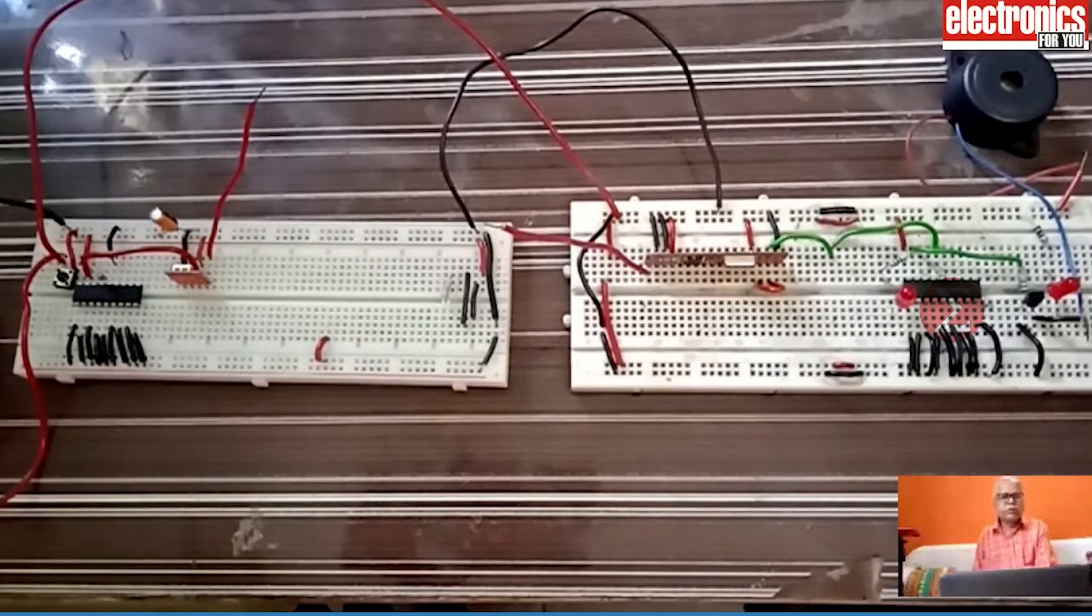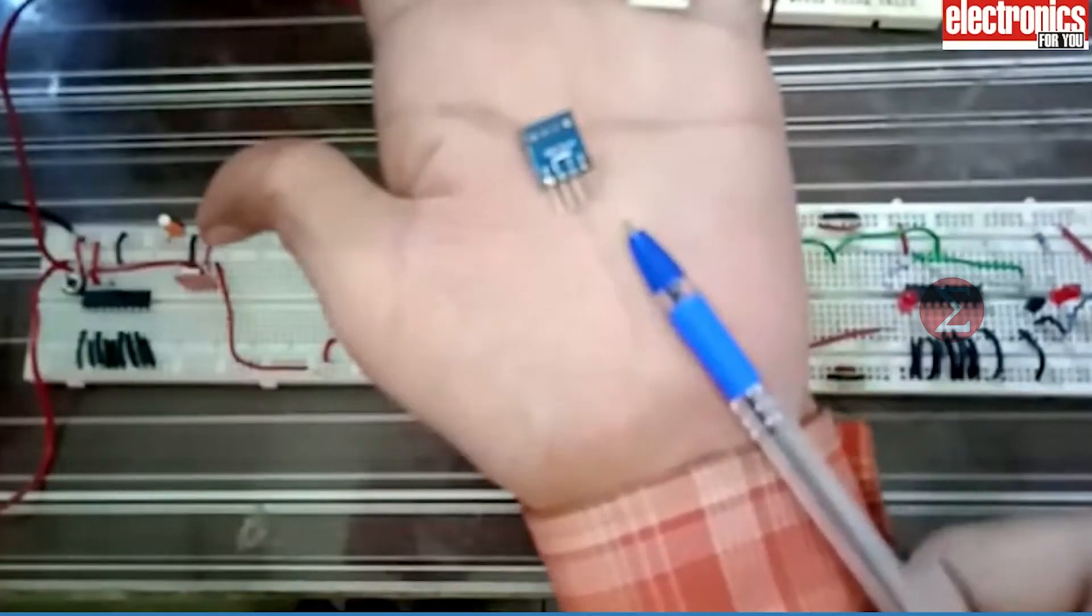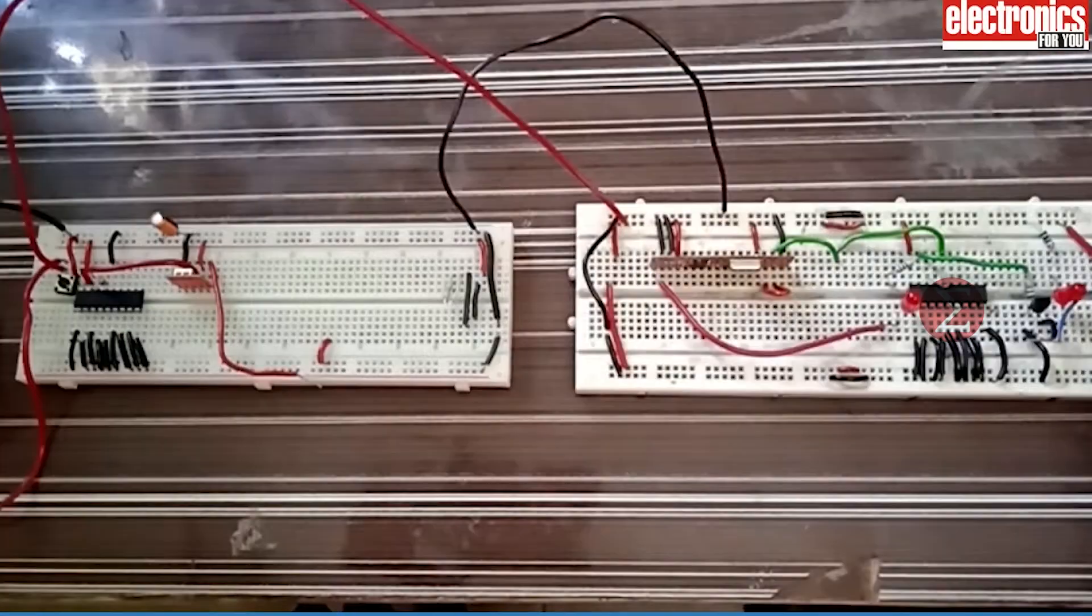Let us take a look at the circuit now. In the transmitter circuit, here you can see the encoder IC is connected, and an RF transmitter module which has 4 pins is connected. Apart from this, a push button, a resistor, and a capacitor creates the full transmitter circuit.